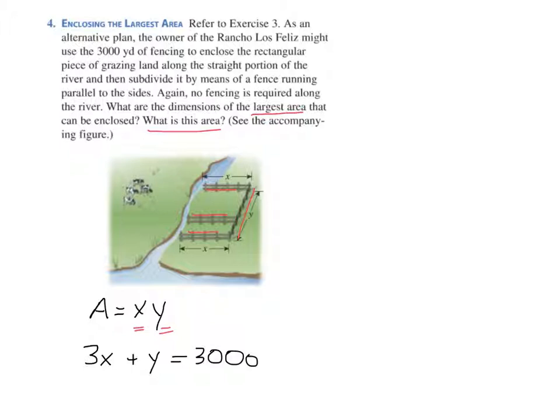If we solve that for y, then we'll end up with y equals 3,000 minus 3x, excuse me. And we can use that to help us eliminate one of the variables. So this is our constraint here, y equals 3,000 minus 3x.